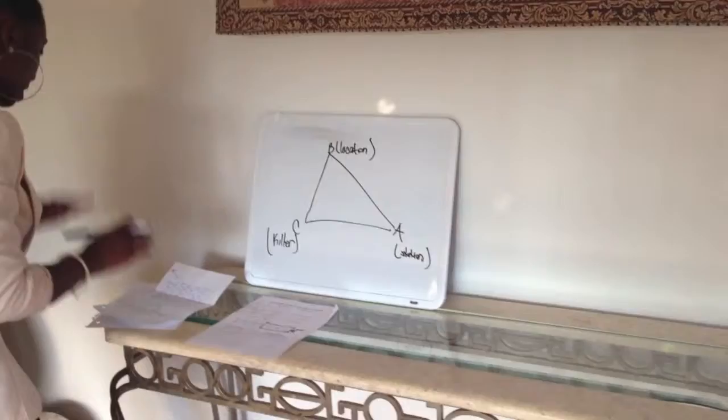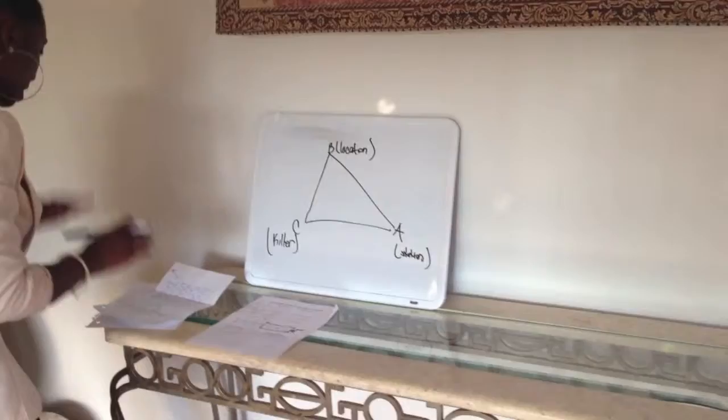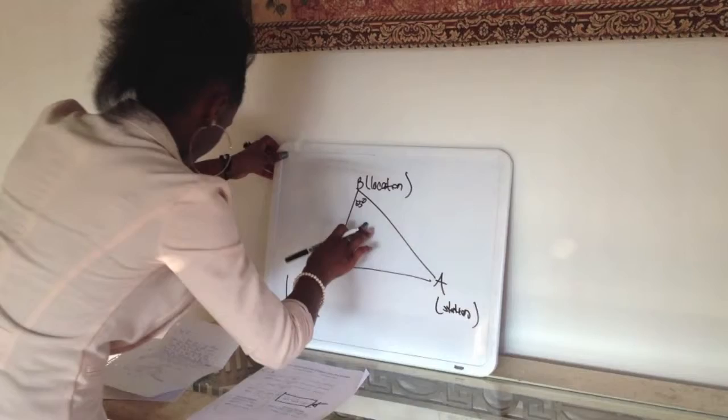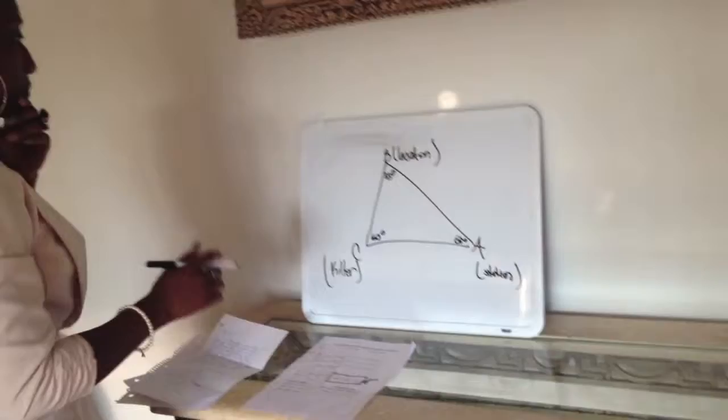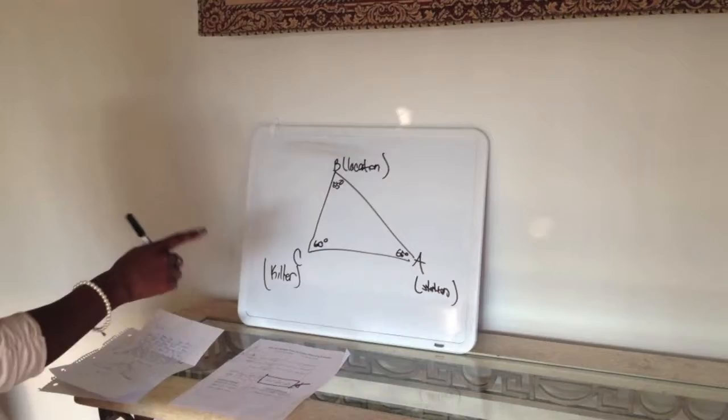And then the killer. He told us the distances about where he was. This was approximately 55 degrees north. This is 65 degrees and 60 degrees — that's what it states in the letter. If you add all of these up, that's 180. That makes a perfect triangle.